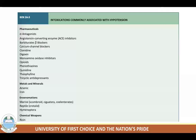Common intoxicants associated with hypotension include pharmaceuticals such as alpha antagonists, ACE inhibitors, barbiturates, calcium channel blockers, clonidine, and digoxin. Metals and minerals include arsenic and iron. Envenomations include ciguatoxins and scombroid — marine organisms — and reptiles. Chemical weapons include ricin and nerve agents.